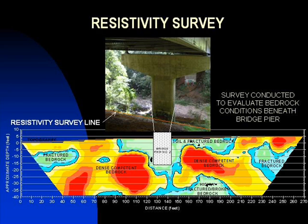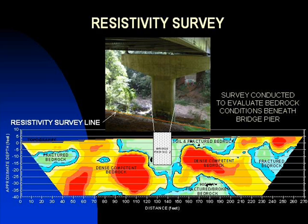Resistivity surveys can be an economical approach to evaluating bedrock conditions and to identify areas that contain large voids, incompetent rock, or abrupt changes in depth to bedrock. The resistivity results obtained along a survey line to evaluate bedrock conditions beneath a bridge pier are shown in this slide. The high resistivity values, contoured in yellow, represent competent bedrock. The blue and green contours representing low resistivity values are probably in response to broken or highly weathered bedrock conditions.